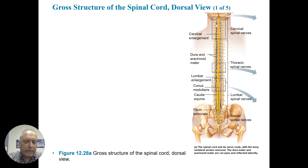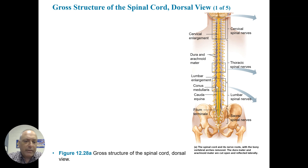Let's look at the spinal cord. We've got a cervical enlargement and cervical spinal nerves, then different thoracic nerves that come off — you can see the ganglia there. We've got a lumbar enlargement, and then a conus medullaris, a cauda equina, and a filum terminale. These are just portions of the spinal cord as it terminates in the sacrum. The conus medullaris is part of the spinal cord, the cauda equina are the fibers that come off like a horse's tail, and the filum terminale is the end of the spinal cord. You also have lumbar and sacral spinal nerves.